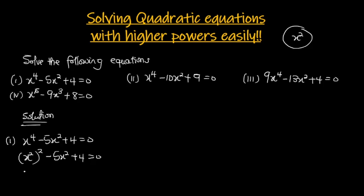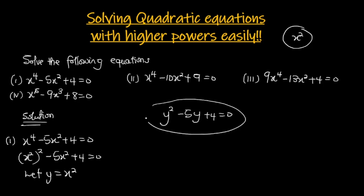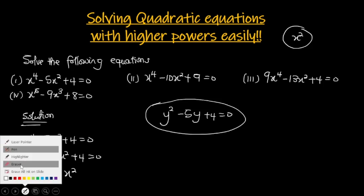Now we let y = x², so wherever we see x² we put y. The equation becomes y² - 5y + 4 = 0. This is now a standard quadratic equation raised to the power 2, so we can easily solve it and get our answer.